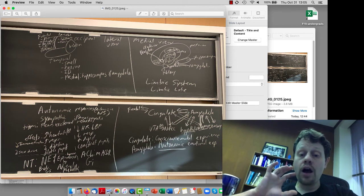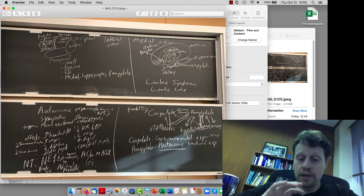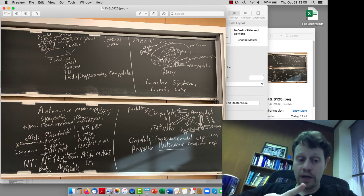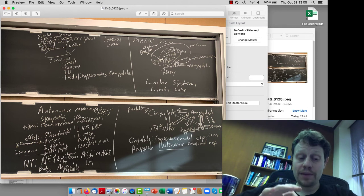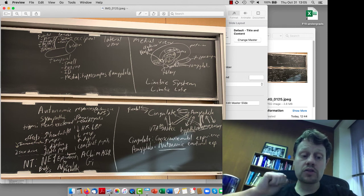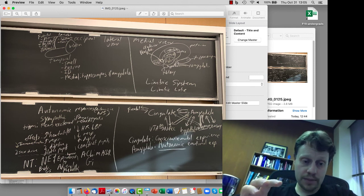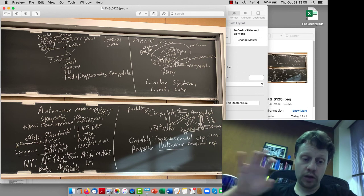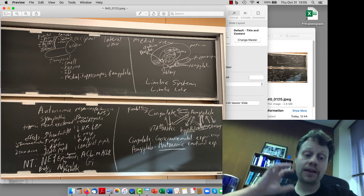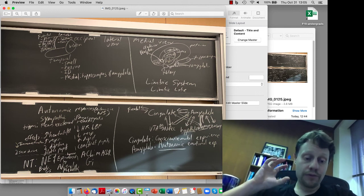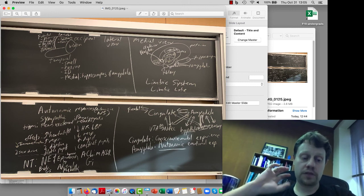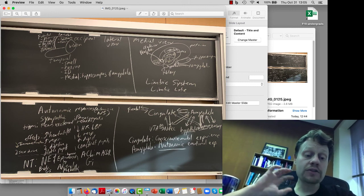Now the autonomic nervous system has two branches. One branch is the sympathetic nervous system. This uses norepinephrine and epinephrine. Norepinephrine comes from the neurons themselves and can act on individual organs one at a time. It's the fight, flight, fear, flee, freeze response, and also excitement.